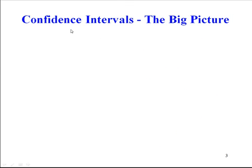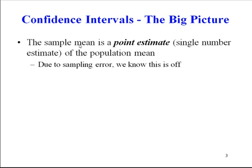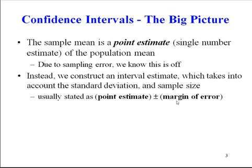So let's see some examples. The big picture: the sample mean is a point estimate. We're trying to estimate the average that people earn. We get 65,000. Well, that's the point estimate, but we know it's off due to sampling error. Sampling error is just the natural difference between the true population mean and the sample result. Most likely the sample result is off — there's nothing wrong with the sampling process. So that's why we do a point estimate plus or minus a margin of error. That margin of error takes into account the standard deviation and sample size. We just take x-bar plus or minus e.